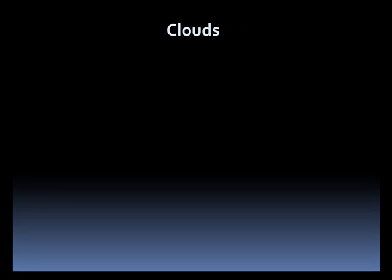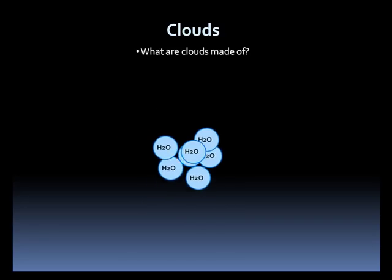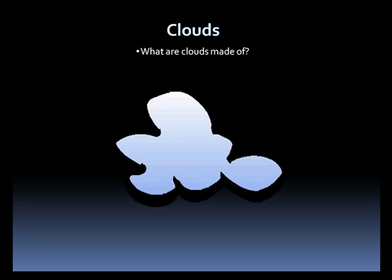First, what are clouds made of? Basically, they are made out of very small water drops we call cloud droplets. These are so small and so light that they can suspend in the air. So when you bring a lot of these cloud droplets together, they form clouds.